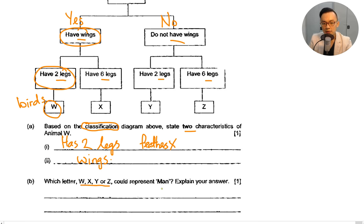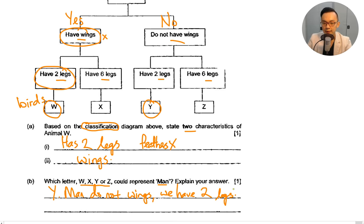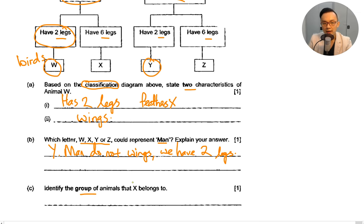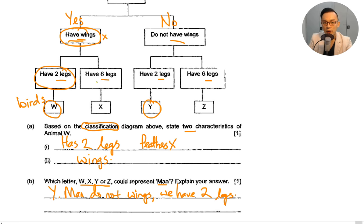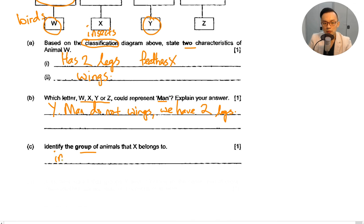Which letter — W, X, Y, or Z — represents men? Men do not have wings and have two legs, so the answer is Y. Next: which animal group does group X belong to? Group X has wings and six legs. Every time you see six legs, it's insects. So group X belongs to insects. Remember: insects have six legs, three body parts, and two feelers.